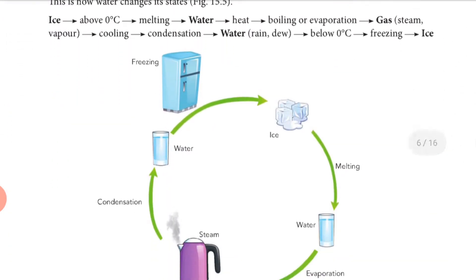When water vapor present in the atmosphere cools down, it starts to convert back into water. This is called the condensation process — when gas converts into liquid. When this water then starts to convert into ice, that process is called freezing, which occurs at zero degrees Celsius or below.